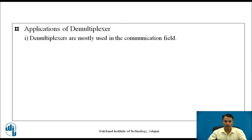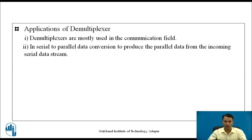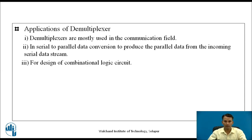Applications of demultiplexers: Demultiplexers are most widely used in the communication field, along with multiplexers. In serial-to-parallel data conversion, demultiplexers are used to produce parallel data from an incoming serial data stream. Demultiplexers are also used to design combinational logic circuits, which are very easy to design. They are also used in arithmetic and logic units to store data in multiple registers.